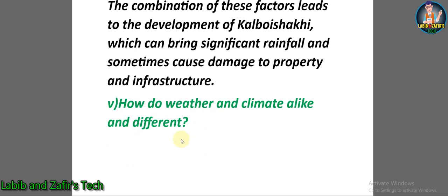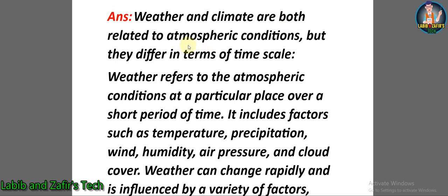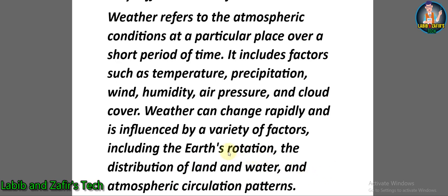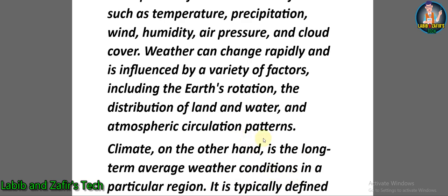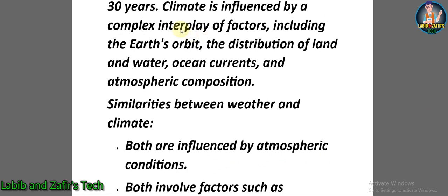Descriptive question number five: How are weather and climate alike and different? Answer: Weather and climate are both related to atmospheric conditions but differ in terms of time scale. Weather refers to atmospheric conditions at a particular place over a short period of time, including temperature, precipitation, wind, humidity, air pressure, and cloud cover. Weather can change rapidly. Climate, on the other hand, is the long-term average weather conditions in a particular region, typically defined as the average weather over a period of 30 years.